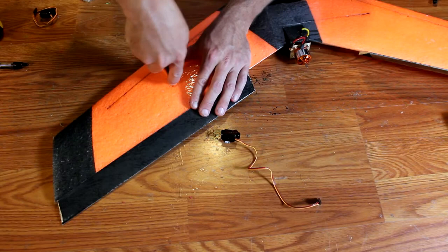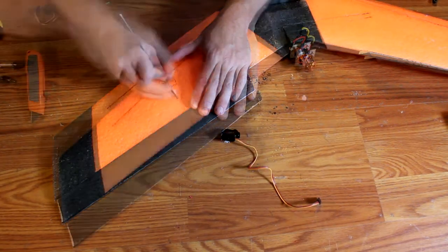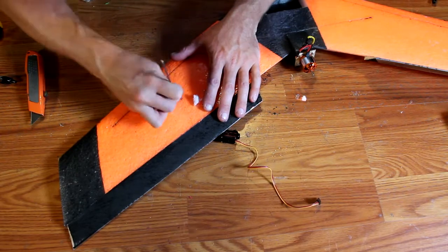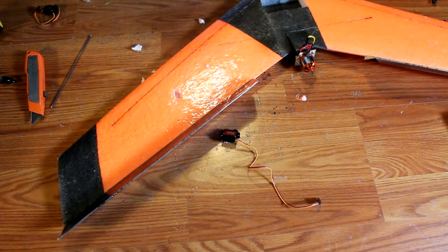Place your servo where you want it to go, and then simply trace out with a pen or marker. Then, take a knife and cut around this area, cutting the inside to make sure the servo fits tightly. Then, simply pluck this out with a screwdriver, add glue, and install your servo.